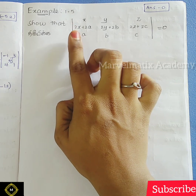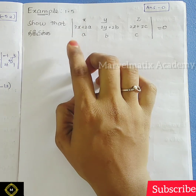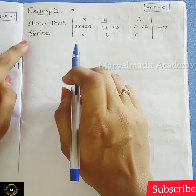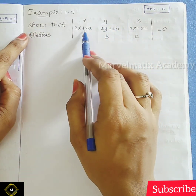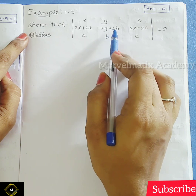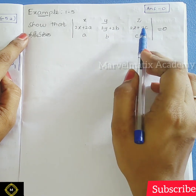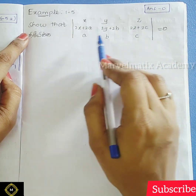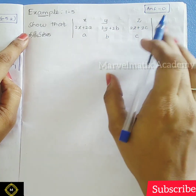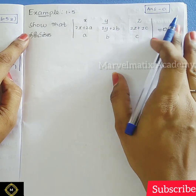Example 1.5: The question is, show that the determinant of x, y, z; 2x plus 2a, 2y plus 2b, 2z plus 2c; a, b, c is equal to 0.